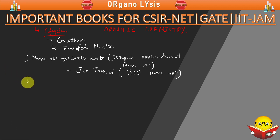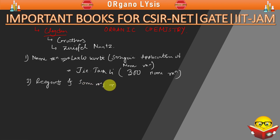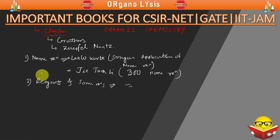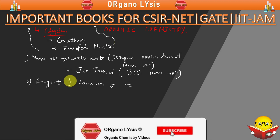If you want to know reagents and other reactions, the best books for this are Carruthers, Zweifel, and Clayden. These three books are very important and you should refer them for CSIR and NGATE. If you are a candidate for IIT JAM, then you should only refer Clayden, which is more than enough.